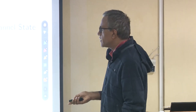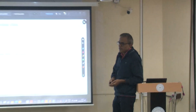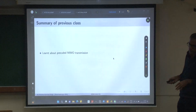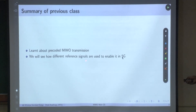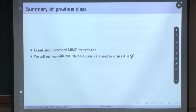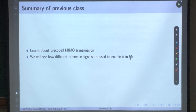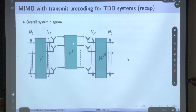Welcome to the class. Let us start by recapturing what we learnt in the last class. We learnt about pre-coded MIMO transmission, and we are going to see how different reference signals are used to enable this pre-coded MIMO transmission in 5G. Before understanding what I mean by this, let us recapture what we saw in the last class.